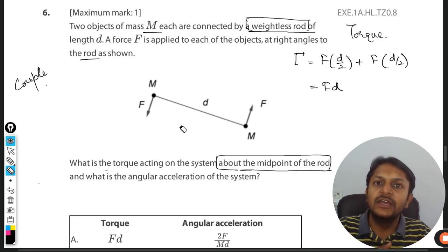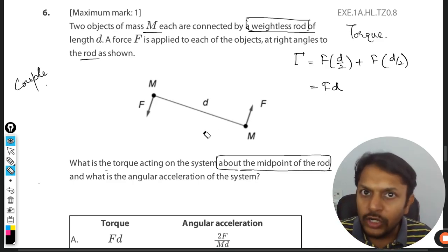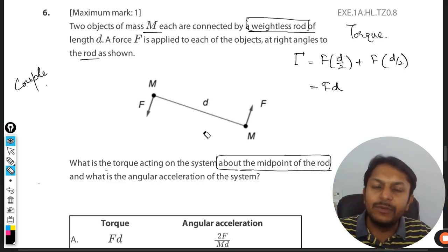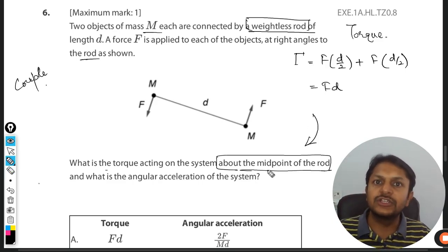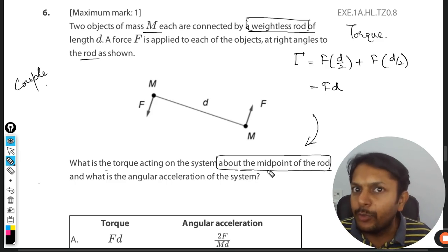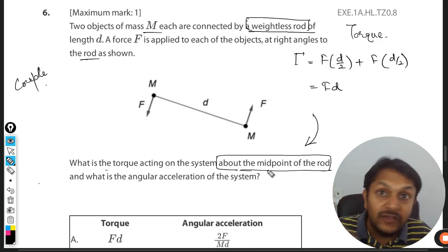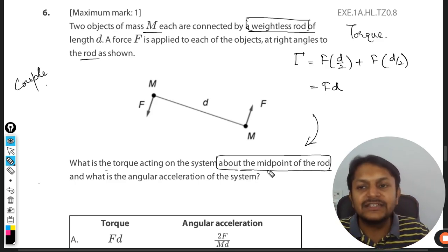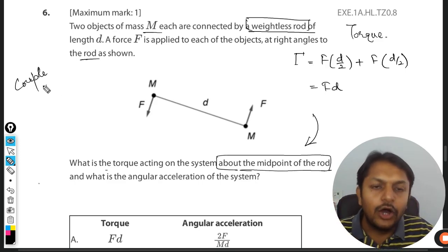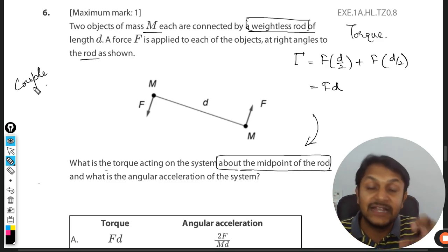Couple is when the hinge point is not given or there is no pivot point. Try to understand, it is a rod, force is applied on it, but it is not hinged anywhere. It is given in the question that you can use the midpoint as the pivot point, but it might not be given to you in some other question. Then what? If it is not given, in those cases we just assume the couple, or you can say we just assume that the center point is the pivot point.